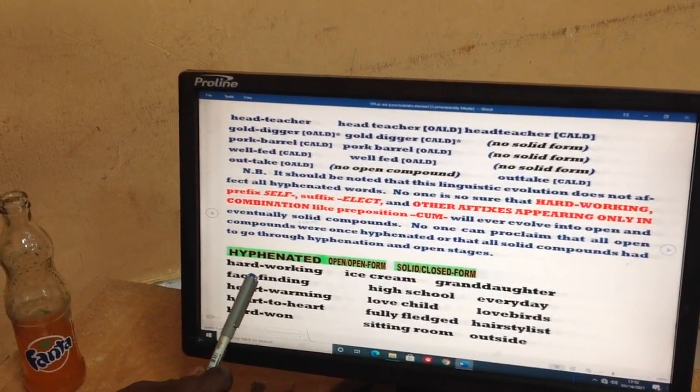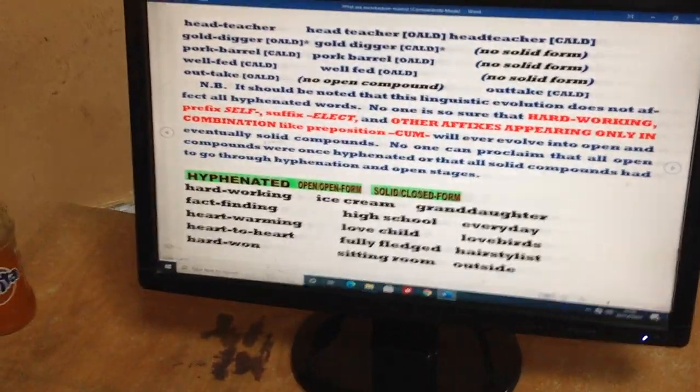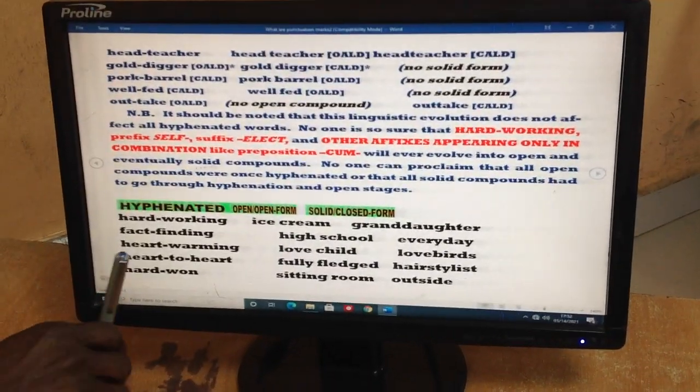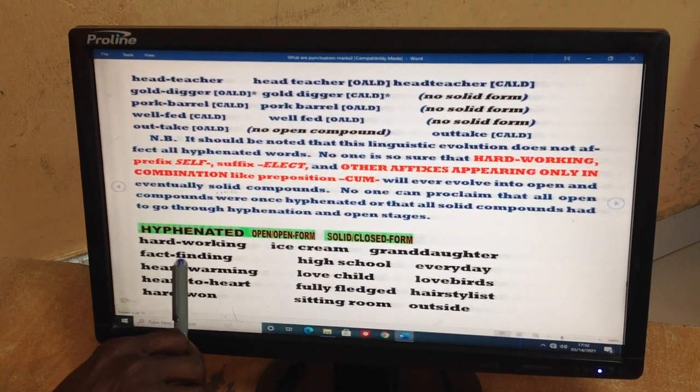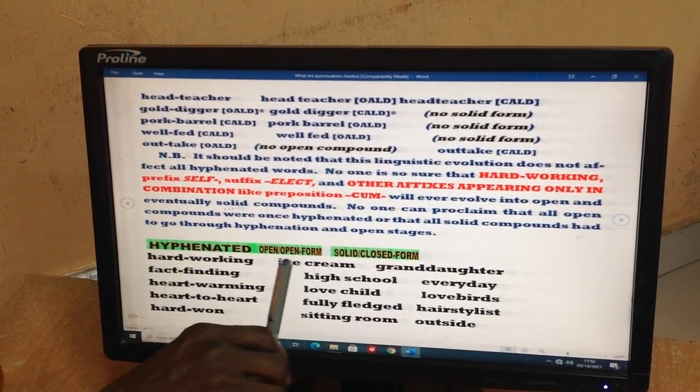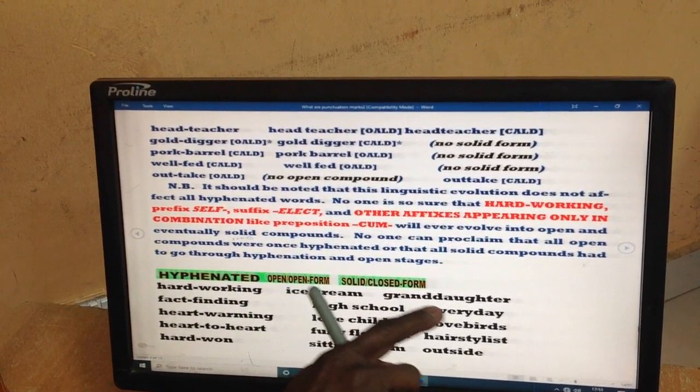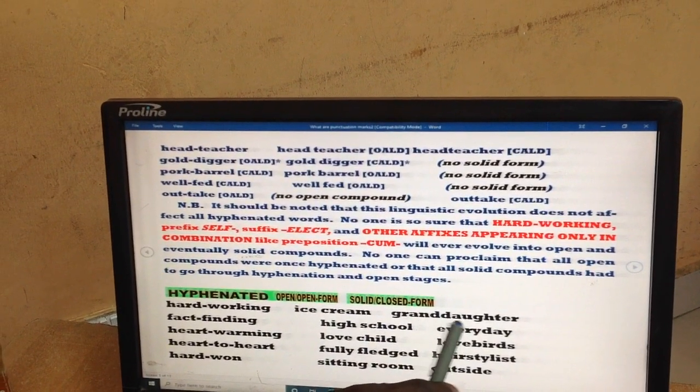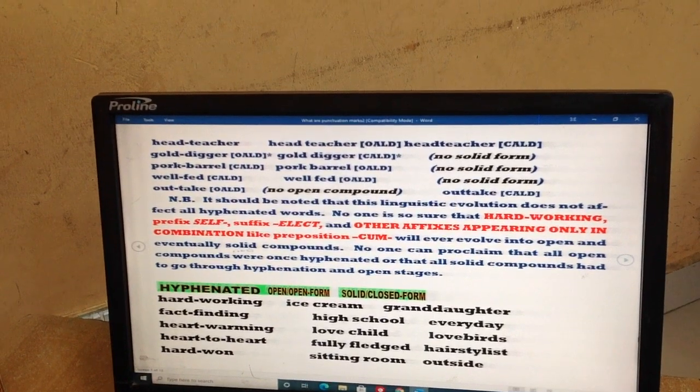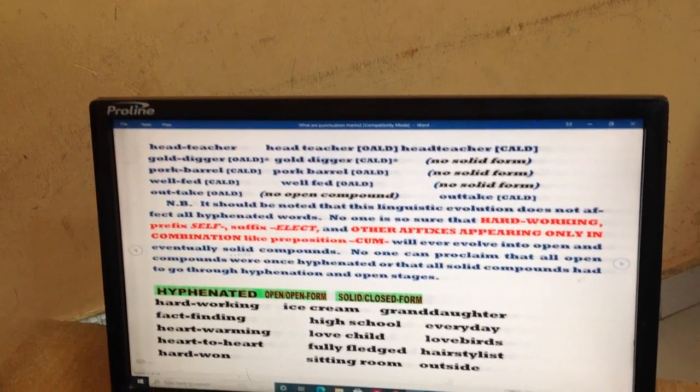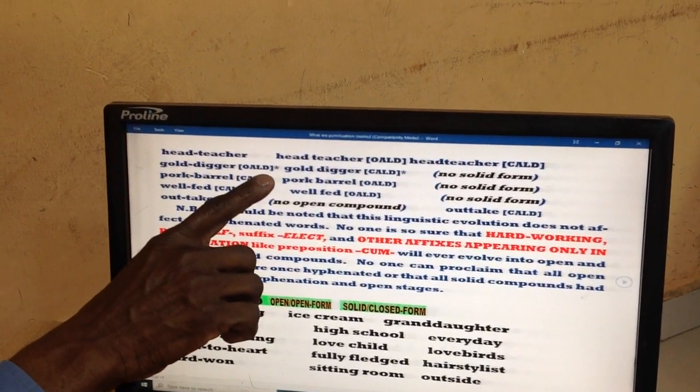We take, for instance, hard working. This should always be hyphenated if we mean working very hard. We come to fact-finding. It will also be always hyphenated. Ice cream, we have two words to refer to one meaning, and that's an open compound. Granddaughter, it's written as one word. We call it solid compound. Let me reverse a little bit concerning the hyphenated compound and open compound.